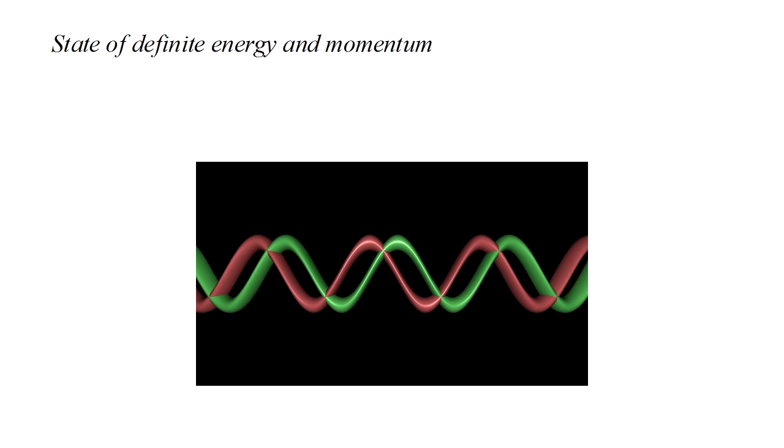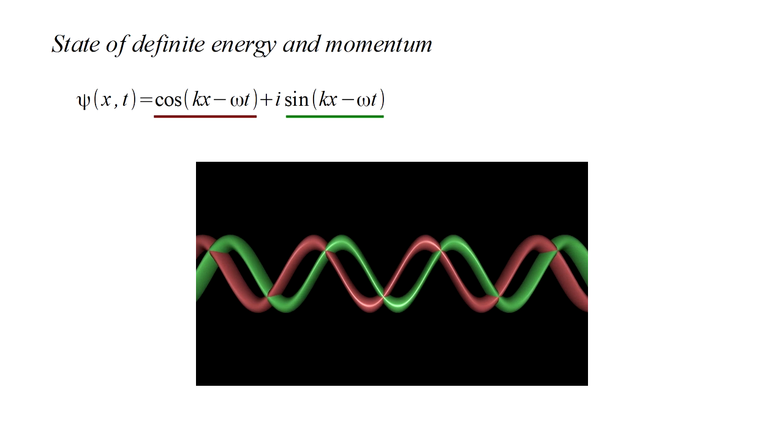We saw in video five on the Schrodinger equation that this sinusoidal variation has to have two parts, a real part shown in red and an imaginary part shown in green. So the wave function would have the form cosine of KX minus omega T plus the imaginary unit I times sine of KX minus omega T. Here we've used the shorthand omega for 2 pi times frequency nu and K for 2 pi over wavelength lambda.